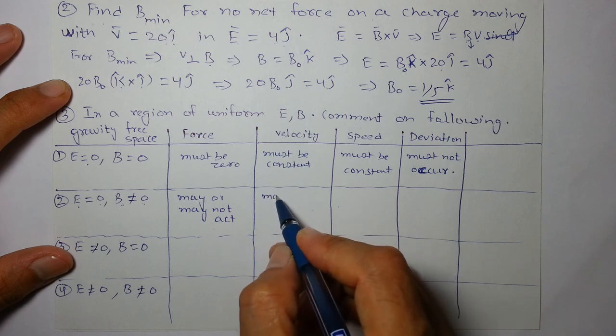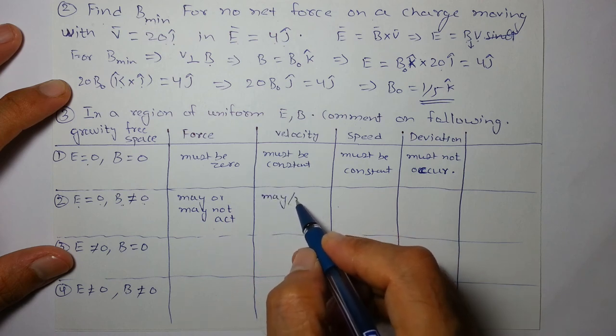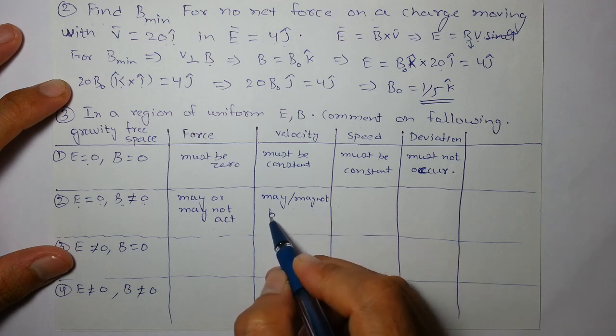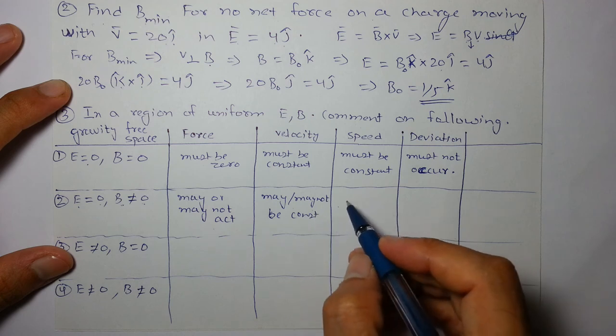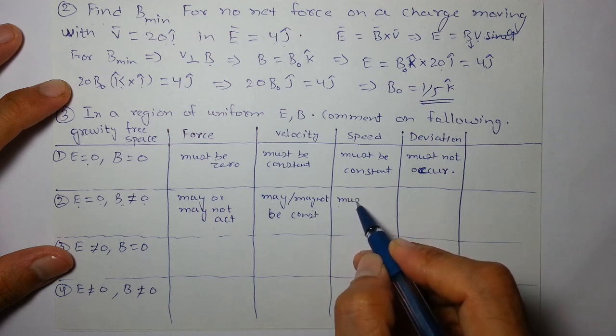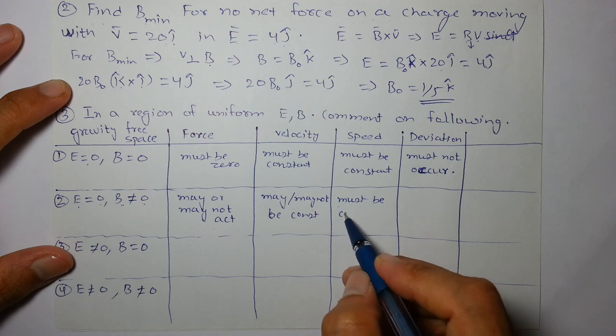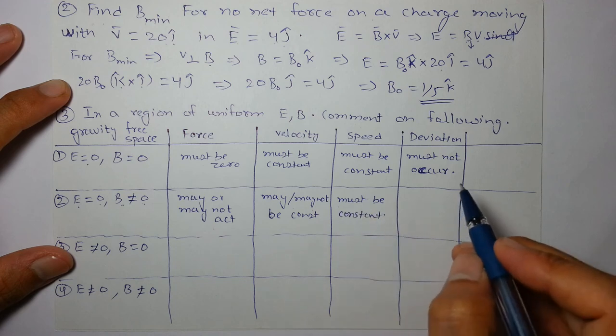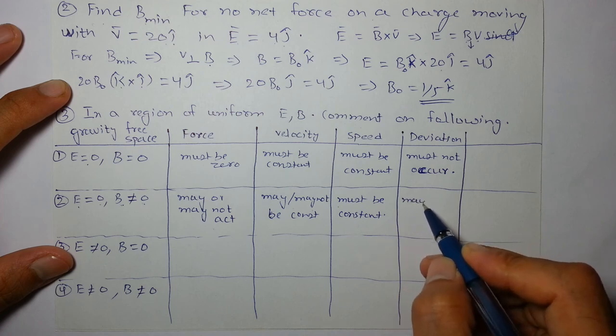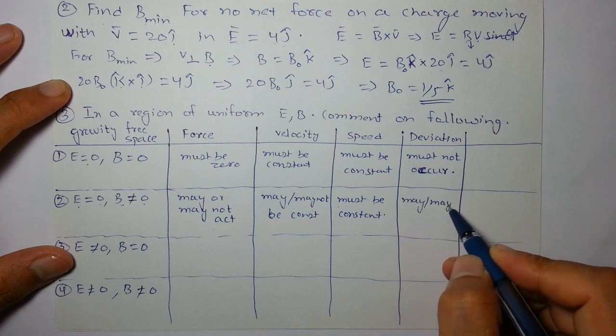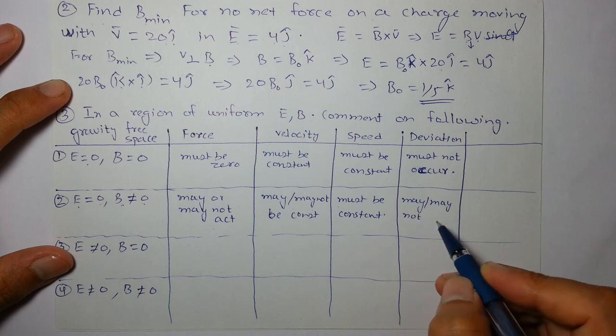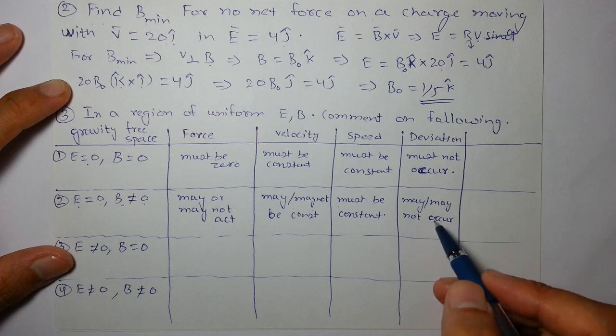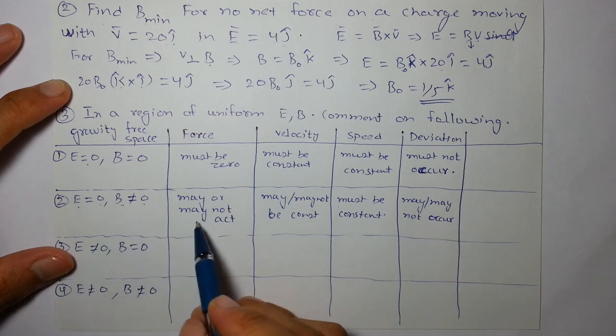Velocity may or may not be constant, may or may not be constant. Speed must be constant because magnetic force if it acts will not change your speed. Deviation may or may not occur, may or may not occur. Because if force acts then deviation will happen, if it doesn't act then it won't. Because magnetic force may not act even with magnetic field present.